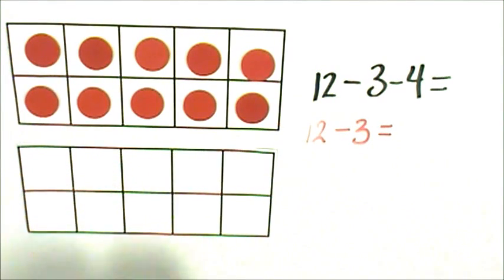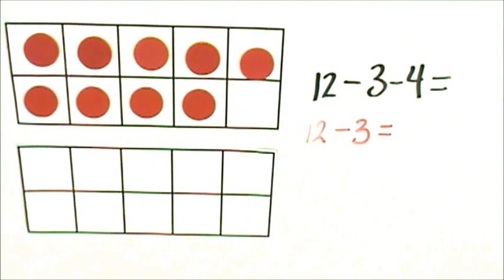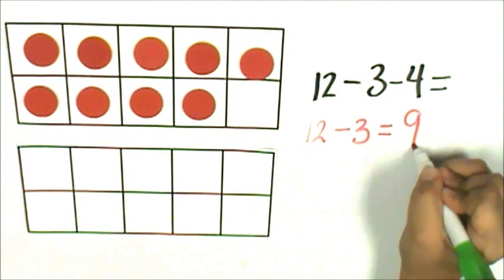I take 2 away, that's 10, and one more, that's 9. 12 minus 3 is 9.